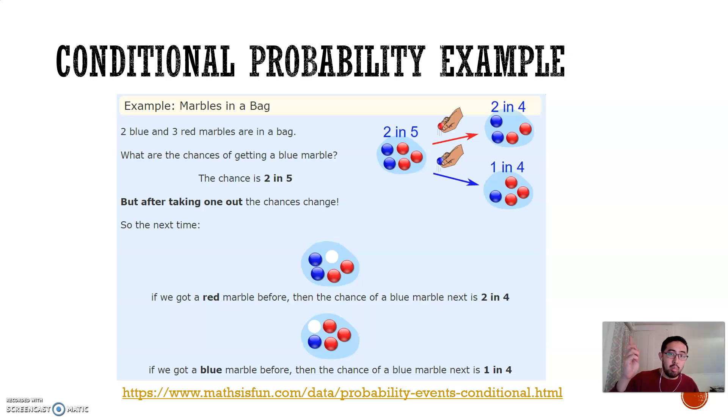Well, the next time you pick one out, the conditions have changed depending on what the first marble is. If you picked a red on the first trial, now your chance of getting a blue is two out of four. If you picked a blue on the first trial, now your chance of getting a blue is one out of four. So this is conditional probability. What's the probability of picking a blue given I picked a red on the last trial? That would be two out of four. What's the probability I pick a blue given I picked a blue on the last trial? Now it's one out of four, another example of conditional probability.